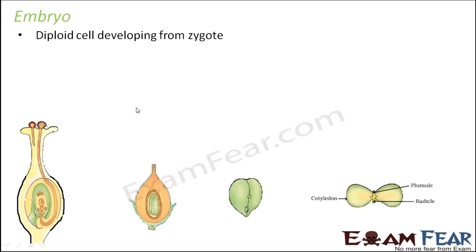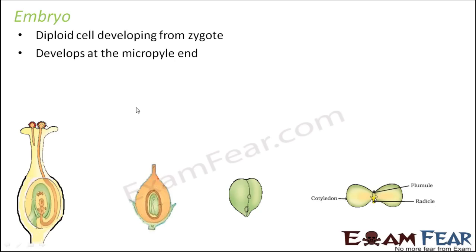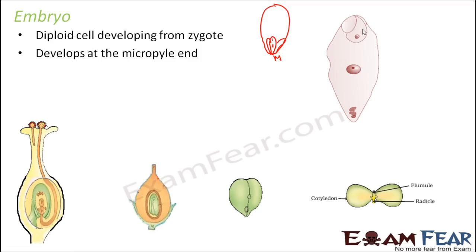The embryo is a diploid cell developing from the zygote through repeated divisions. It develops at the micropyle end, which is where the egg cell was present. When the male gamete fertilized the egg, the zygote formed at the micropyle end, so the development of the zygote into the embryo also happens at the micropyle end.